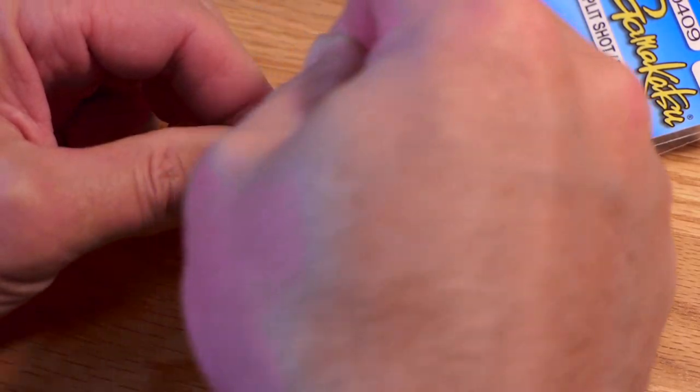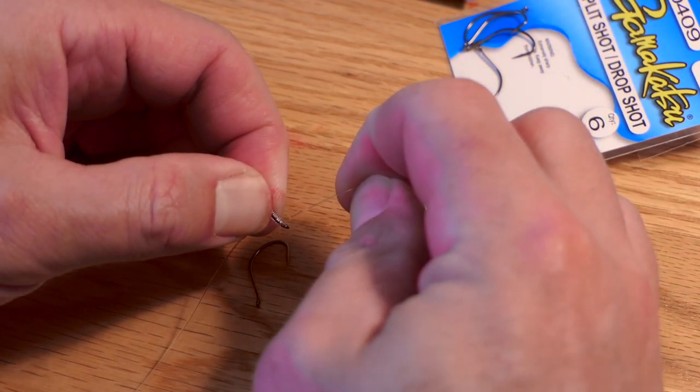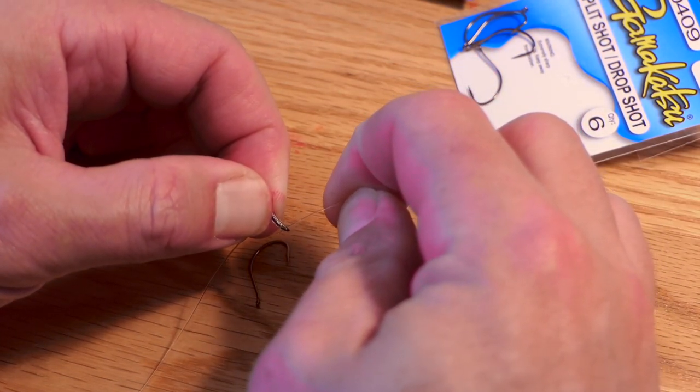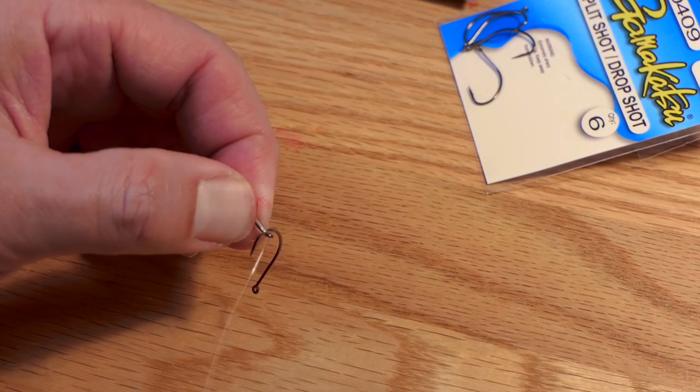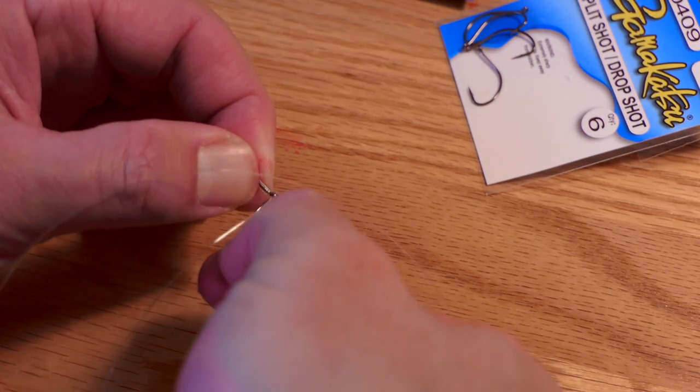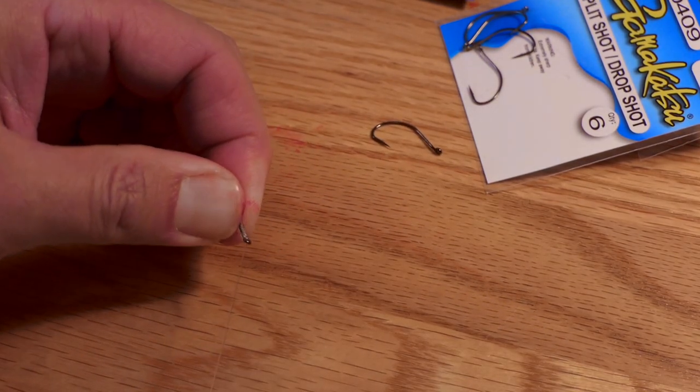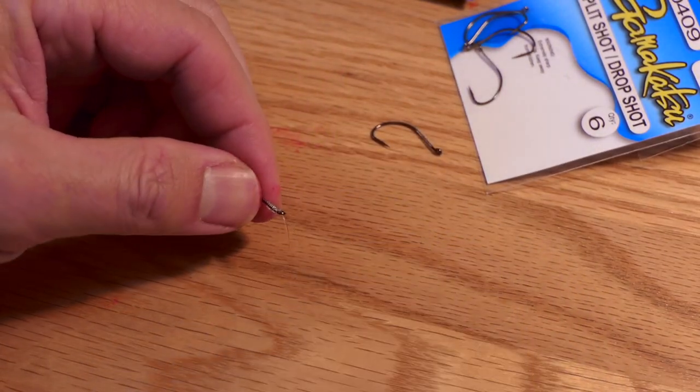I do about six to seven wraps back. Take your other tag end. I've only got about two foot of line here, which is probably way more than I need. And then pull it back through. Don't grab the other hook. Not what I wanted to do. Sorry about that. There we go. So there's the first hook applied.